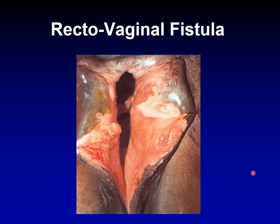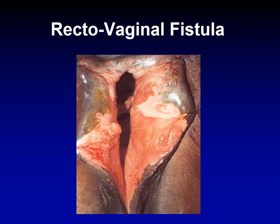Here is an example of a rectovaginal fistula — this is the rectum, this is the vagina, and this is the fistula, the canal opening between them. Because these structures are retroperitoneal, their repair is easier. All you need to do is reconstruct the rectum and then reconstruct the vagina, and the horse will heal with no infections and no problems. This is the importance of the retroperitoneal positioning.